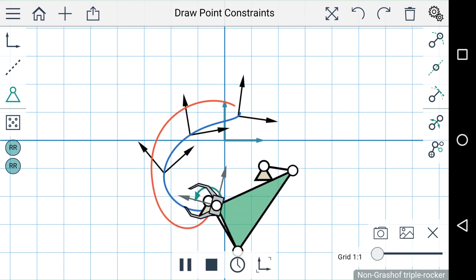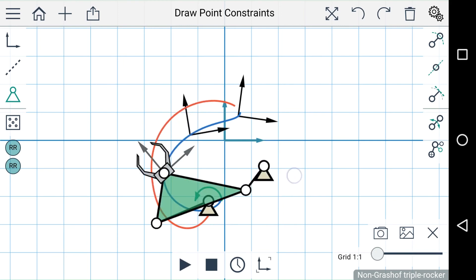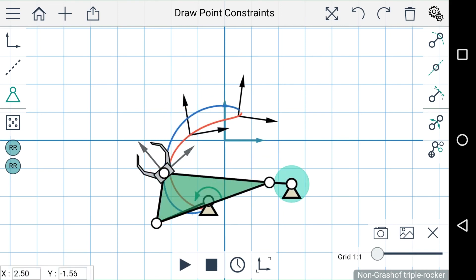As you can see the linkage passes through all three points and you can move these point constraints if you'd like and the linkage will change to fit the constraints.